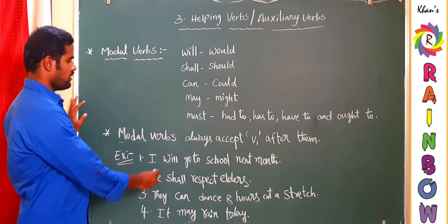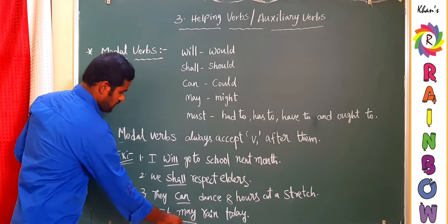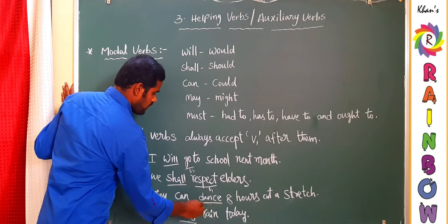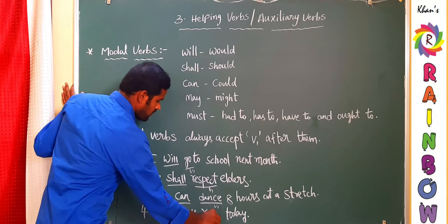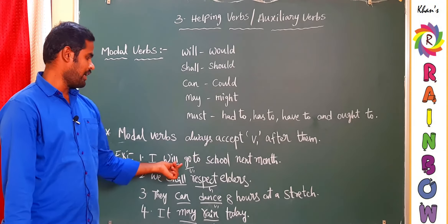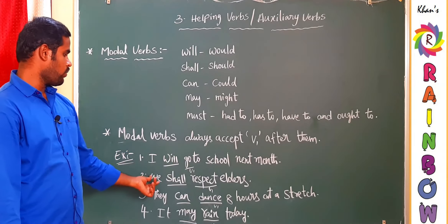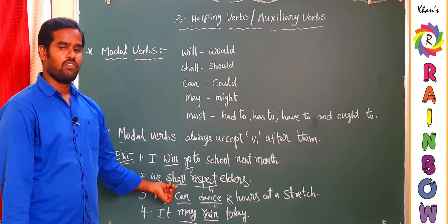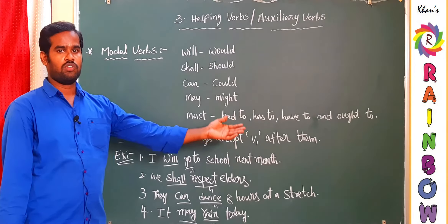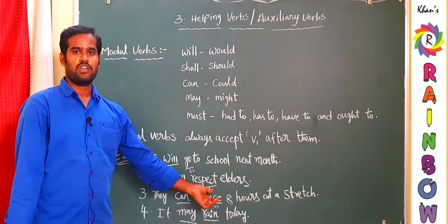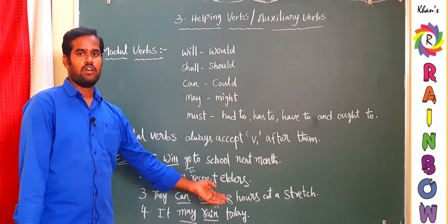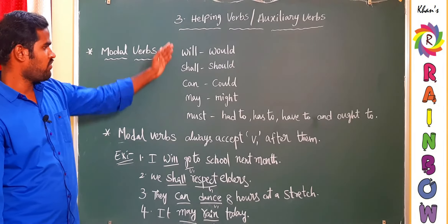Here are examples using will, shall, can, and may. Observe the verbs: 'go' is V1, 'expect' is V1, 'dance' is V1, and 'rain' is V1. 'I will go to school next month' — will accepted V1 'go.' 'We shall respect elders' — shall accepted V1. 'They can dance eight hours at a stretch' — can accepted V1. 'It may rain today' — may accepted V1 'rain.' The rule is fulfilled in all examples.